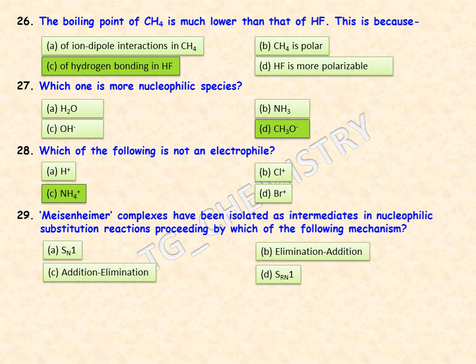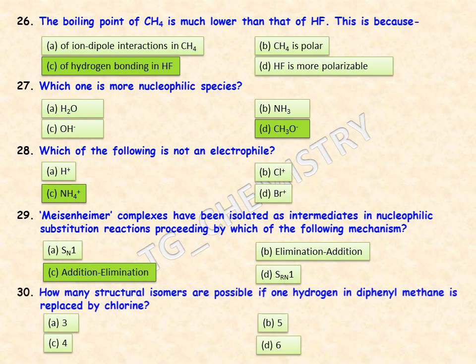Meisenheimer complexes have been isolated as intermediates in nucleophilic substitution reactions proceeding by which mechanism? Options are SN1, elimination-addition, addition-elimination, or SRN1. The right answer is option C — addition-elimination reaction.